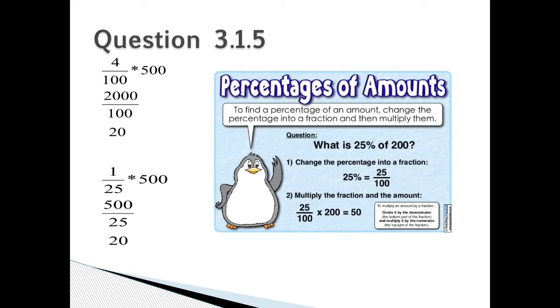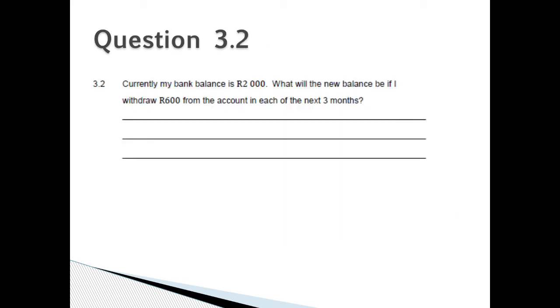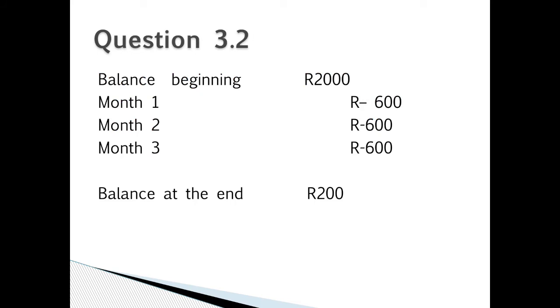Question 3.2: Currently my bank balance is 2,000. What will the new balance be if I would draw 600 from the account in each of the next 3 months? Question 3.2: Balance beginning is 2,000 Rand. So the first month I subtract 600 Rand, the second month I also subtract another 600 Rand, and then in the third month I also subtract 600 Rand. The balance at the end is 200 Rand.